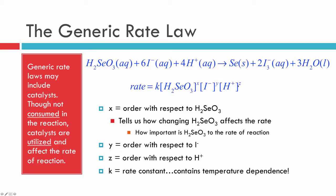These x, y, and z values are called orders with respect to whichever term they're associated with. For example, x is the order with respect to H2SeO3, and the size of x tells us how important H2SeO3 is to the rate. Similarly, y is the order with respect to I⁻ and z is the order with respect to H⁺. It's important to write this generic rate law down so people know which order you're solving for as you work through the problem.